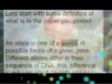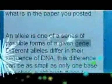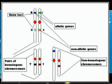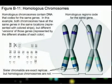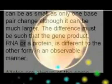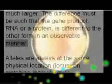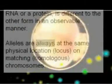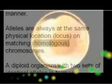An allele is one of a series of possible forms of a given gene. Different alleles differ in their sequence of DNA. This difference can be as small as only one base pair change, although it can be much larger. The difference must be such that the gene product — RNA or protein — is different to the other form in an observable manner. Alleles are always at the same physical location, locus, on matching homologous chromosomes.